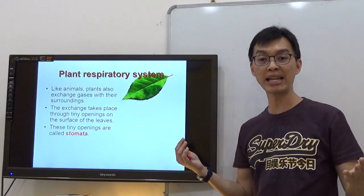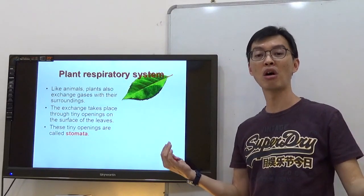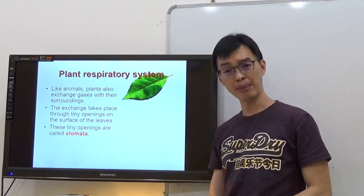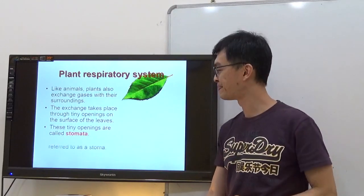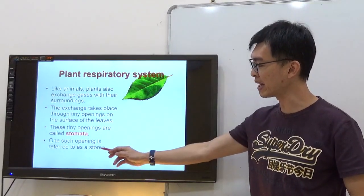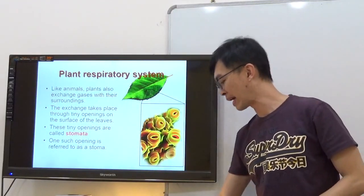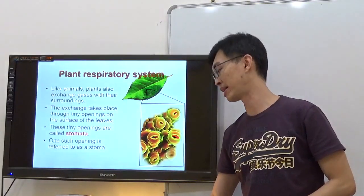Stomata are a mechanism for them to take in oxygen and carbon dioxide. Did you say, carbon dioxide? Yes, I'll tell you later. One such opening is referred to as stoma. So this is just a microscopic view of stomata.